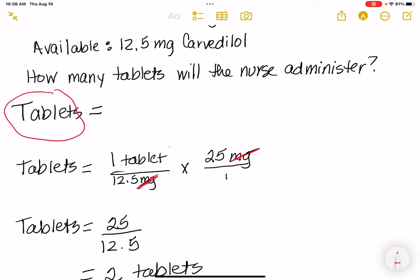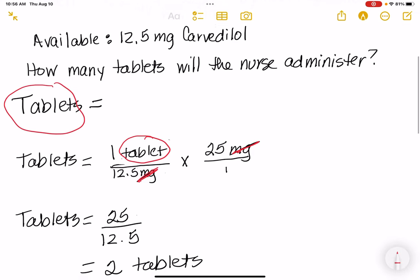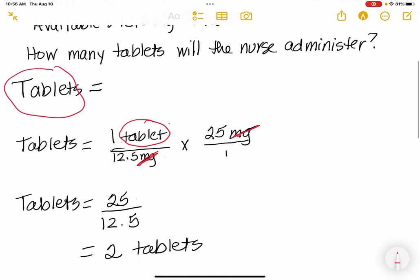And then what I like to do is I like to circle what I actually need. It allows me to think I don't need anything else added to this problem because many times students add extra amounts of material that they don't really need. So we have tablet that's what we want. We can stop here and we have our math 25 divided by 12.5 and our answer then is two tablets. That's what we want to give.